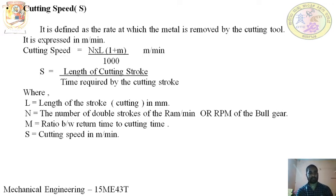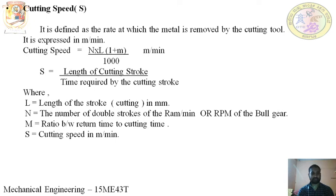Here, L indicates the length of stroke in millimeters. Suppose the ram has a particular length of stroke — how much the ram moves in a cutting stroke is the length of stroke. N equals the number of double strokes of the ram; one is forward stroke and one is return stroke.